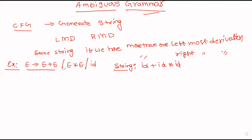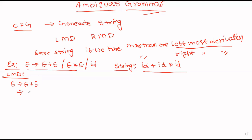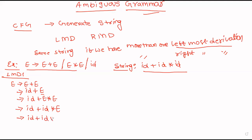From this grammar, we derive this string using more than one leftmost derivation to prove it is ambiguous. First leftmost derivation 1: E → E plus E. In leftmost derivation, we replace the leftmost variable first. So E is replaced with id, giving id plus E. Next, E is replaced with E into E, giving id plus E into E. Then E is replaced with id, giving id plus id into id.